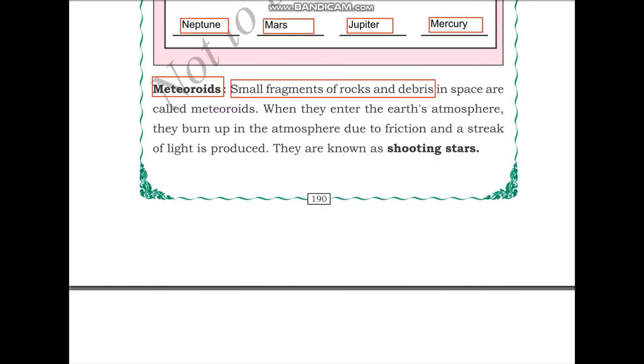When they enter the earth's atmosphere, they burn up in the atmosphere due to friction and a streak of light is produced. We all know that Earth has a layer of air around it called the Earth's atmosphere. Whenever these small rock fragments enter the Earth's atmosphere, they burn up. Why do they burn up? It's due to friction with the gas particles in the atmosphere and a streak of light is produced. They are also known as shooting stars.